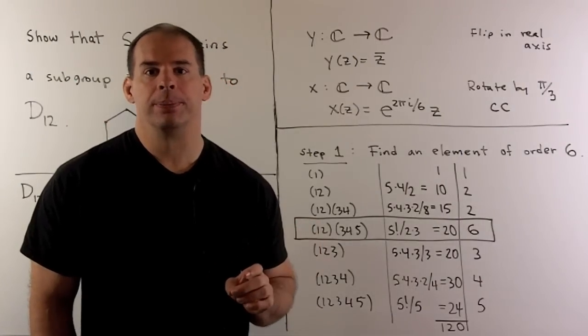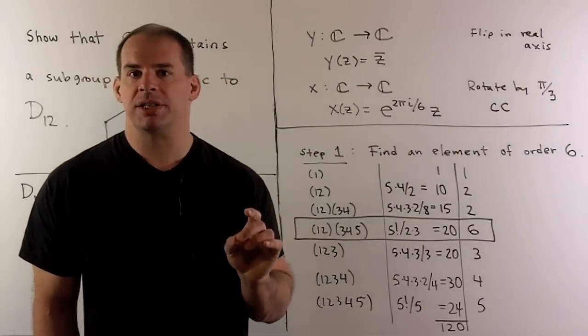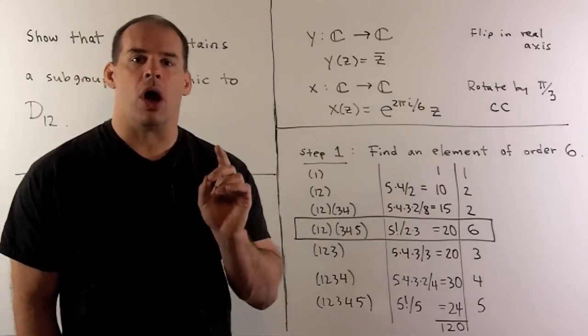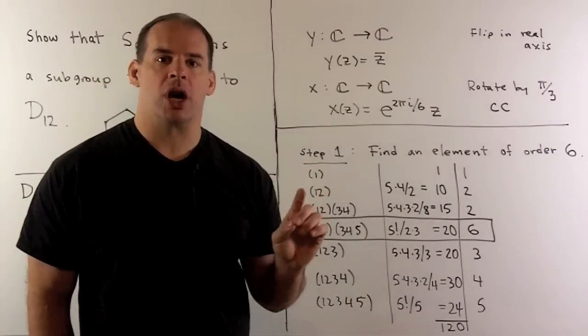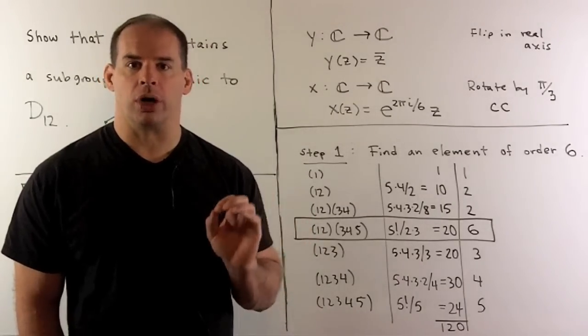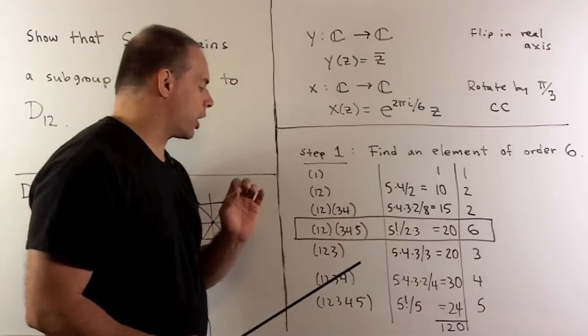For our first step, we look for an element of order 6 in S5. We might as well list all elements of S5 by cycle structure, count the number of elements of each type, and then check the order. What kind of cycle structures occur?